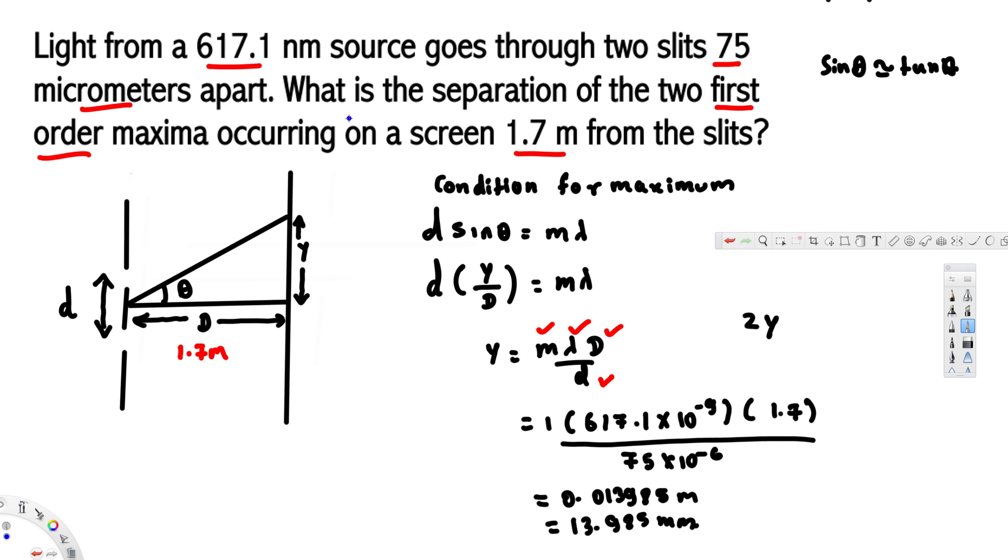Since our purpose is to find 2y, the separation of the two first order maxima, 2 times this value gives us 2y = 27.97 millimeters. This is going to be our final answer. I hope this helps, thanks for watching.